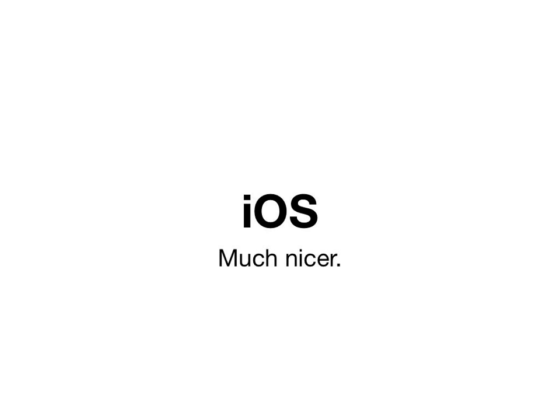The differences on iOS — it's much nicer. All views are layer-backed; there's no such thing as non-layer-backed views. So that demo earlier where the slider was redrawing colors underneath can't happen on iOS because everything's layer-backed automatically. There's also no distinction between layer-hosting and layer-backed views — all views on iOS have a layer and you're allowed to play with that layer as much as you want. UIKit won't override properties. So iOS makes it really easy to play with this stuff.